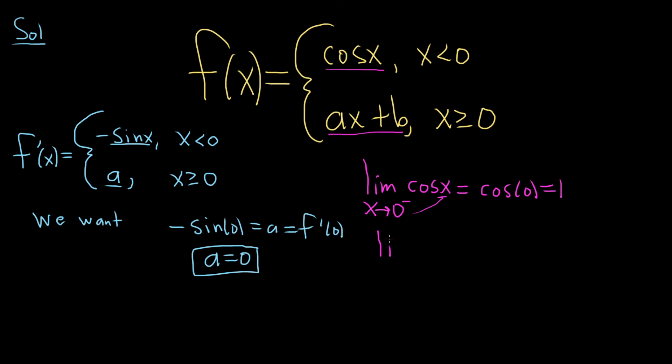Taking the limit from the right as x approaches 0, we have ax plus b. We just plug in 0, so we get a times 0 plus b. Since a is already 0, we just get b. For the limit to exist, b must equal 1.